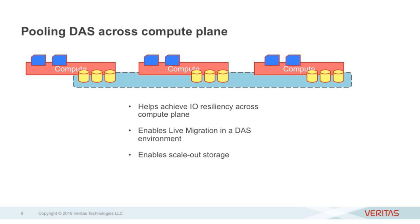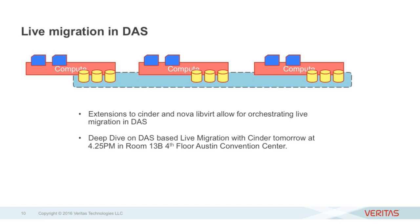Pooling across the compute plane is a must-have for direct-attached storage. You need to stitch together storage into a pool to have resiliency and recovery. You also need pooling to support live migration in a direct-attached storage environment. It gives you the hyperscale storage expected from a typical converged compute plane. Live migration has an upcoming session tomorrow in this same room. It's essentially about extending Nova and Cinder implementations to orchestrate live migration in a shared-nothing, direct-attached storage environment.